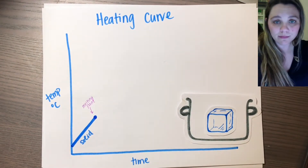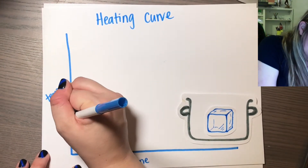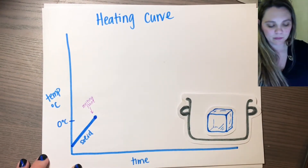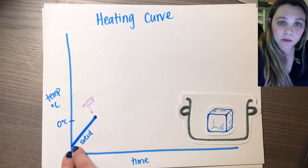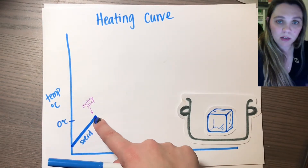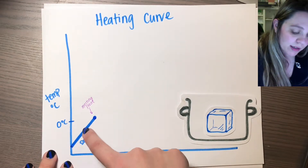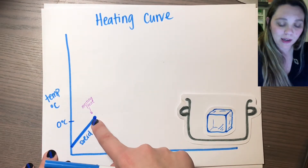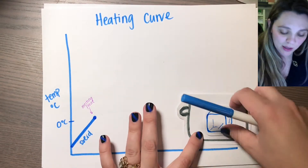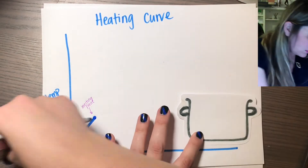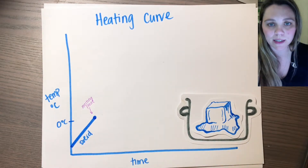So for water, the melting point of water is zero degrees Celsius. So my ice cube is heating up, heating up, heating up — nothing is changing, it's still solid ice throughout this whole process, until boom, it hits right here, the melting point. And then my ice cube starts melting.